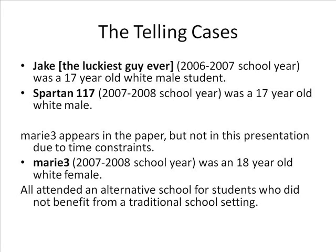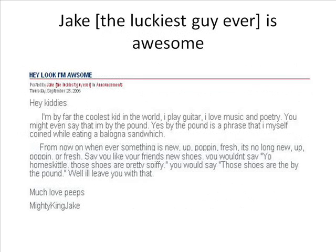The telling cases we extracted were Jake the Luckiest Guy Ever, who was a student from 2006 to 2007 — a 17-year-old white male — and Spartan 117, from the 2007–2008 school year, also a 17-year-old white male. Jake consciously chose his blog name, which began as Mighty King Jake but soon changed to Jake the Luckiest Guy Ever.